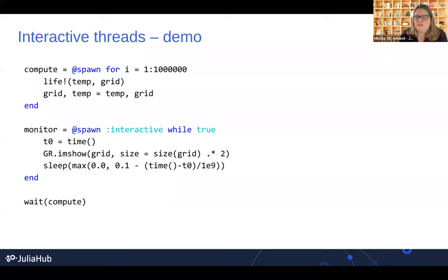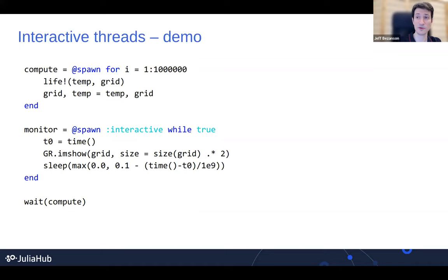What's the main advantage of moving sparse arrays out of the standard library? The main advantage is that it allows it to be developed more quickly — we can develop it as a separate package, release new versions very often, and you can upgrade it independently of the core system and standard libraries. Also, you don't have to have it compiled and loaded in your image if you're not using it. Generally you want things factored out into separate packages — it gives a much better release cadence and development workflow.